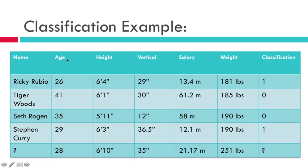We have 5 features that we're giving to the algorithm, and then these are the samples — Ricky, Tiger, Seth, and Stephen. This would be a binary classification, because we have 1s and 0s — 1 being a basketball player and 0 being not a basketball player. It really doesn't matter which one you decide to be 0 or 1; the algorithm does not care.